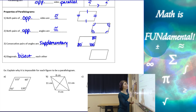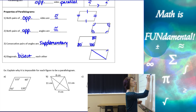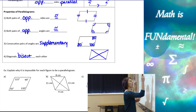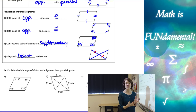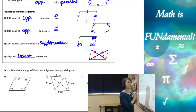The fourth property is that diagonals bisect each other. If we draw our diagonals, bisecting means cutting in half — so these two pieces are congruent, and these two pieces are also congruent.